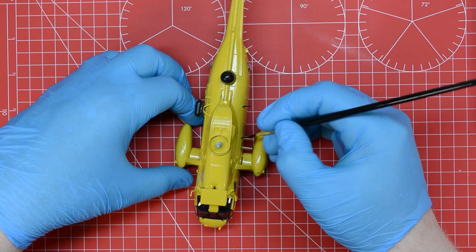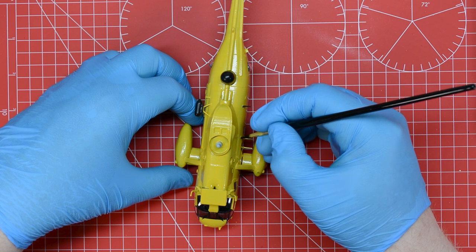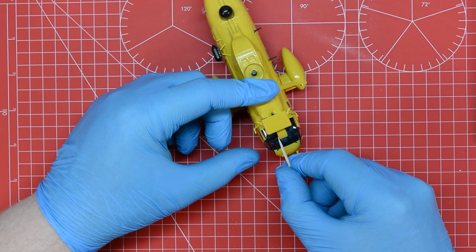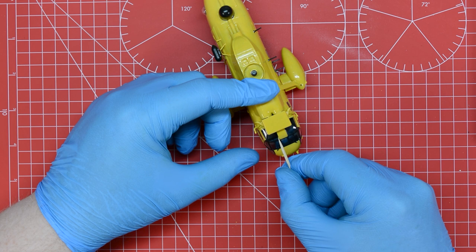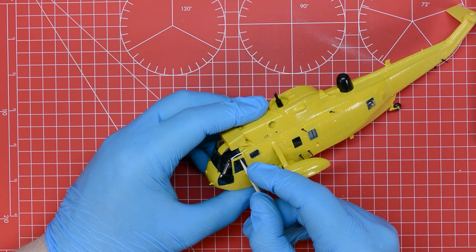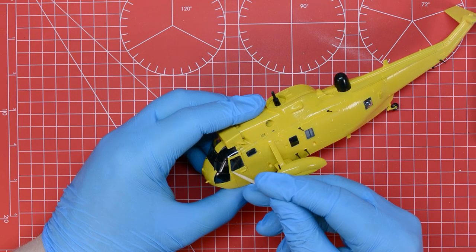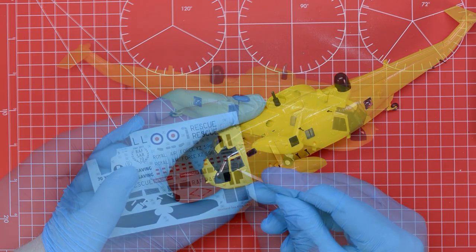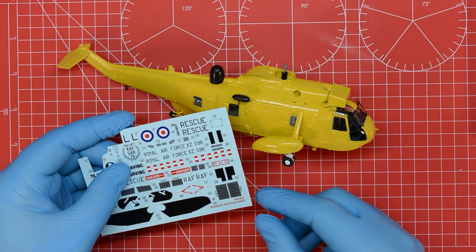If any of the paint during the canopy painting process did get onto the clear parts we can clear this away very carefully using a toothpick to just scratch the paint away right up to the edge of the raised detail. Once this has been cleaned up and all of the details have been painted black as required we can move on to the final stage of the build which is applying the transfers.